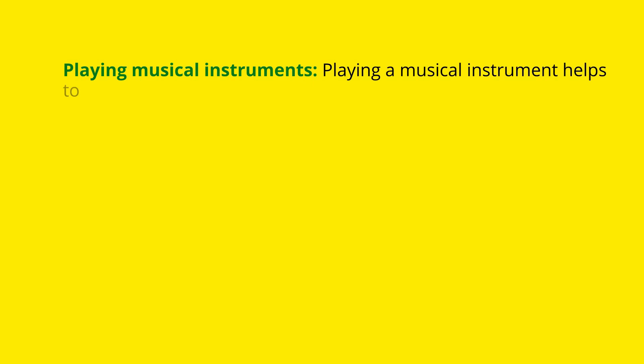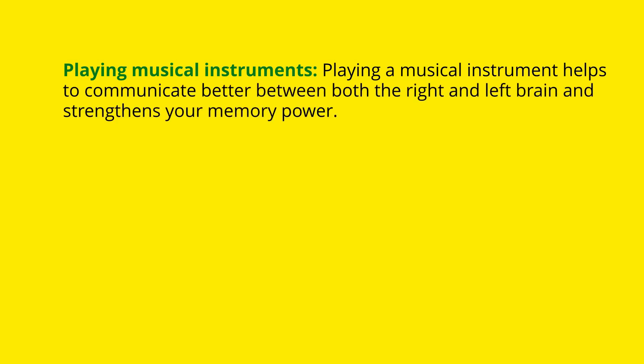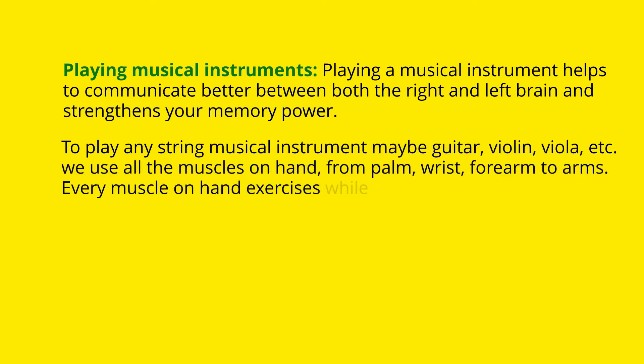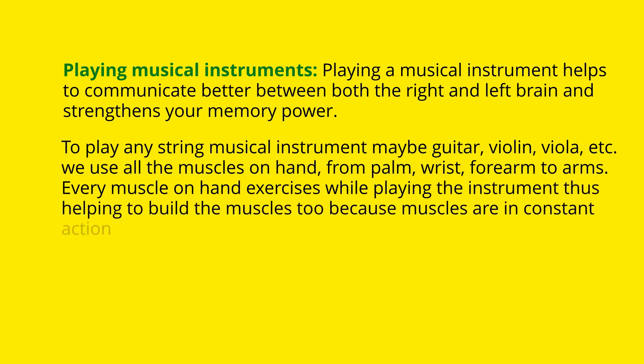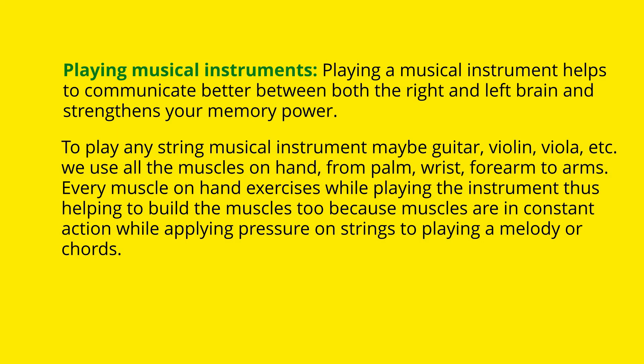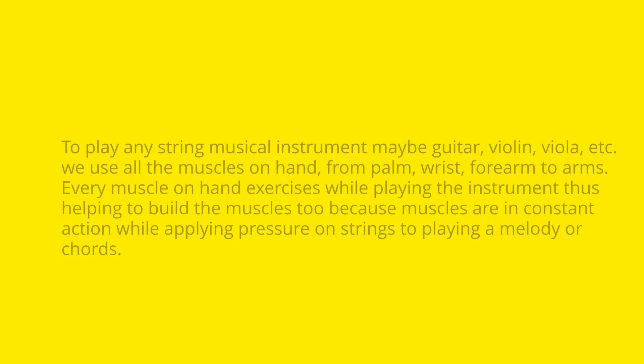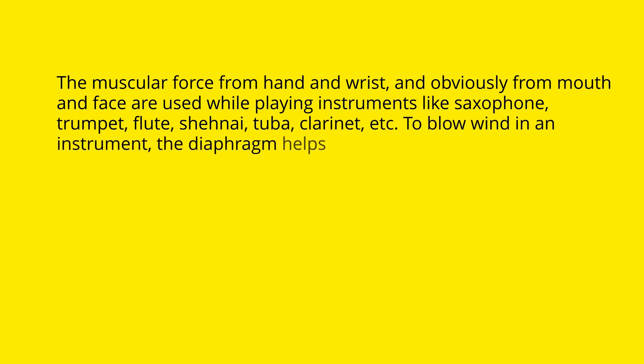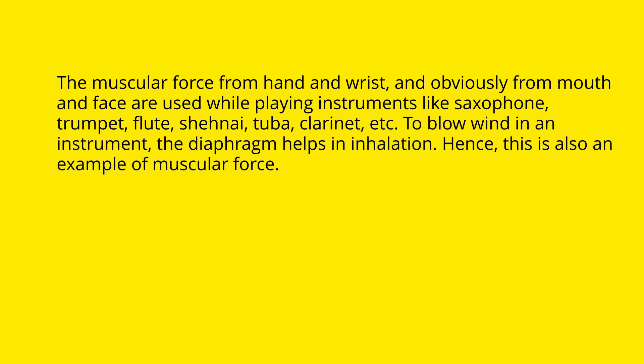Playing musical instruments: playing a musical instrument helps communication between both the right and left brain and strengthens memory. To play any string instrument such as guitar, violin, or viola, we use all the muscles of the hand from palm, wrist, forearm, to arms. For wind instruments like saxophone, trumpet, flute, tuba, and clarinet, the muscular force from the hand, wrist, mouth, and face are used. The diaphragm helps in inhalation while blowing wind into an instrument, hence this is also an example of muscular force.